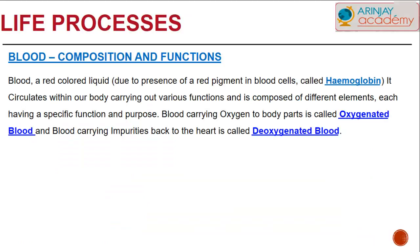Blood is a red colored liquid. The reason it's red is because there is a red pigment present in all the blood cells called hemoglobin. This circulates within our body carrying out various functions and is composed of different elements, each having a specific function and purpose.